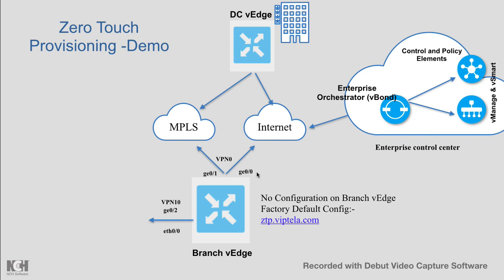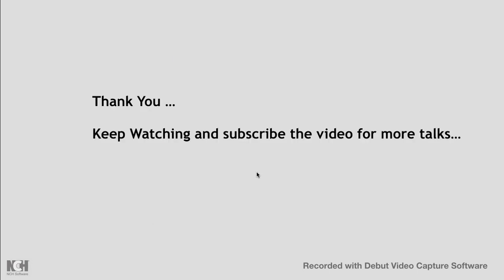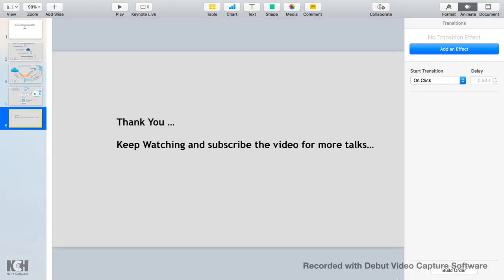You can see the control connections are up — DTLS connections via internet to the vSmart controller, another DTLS via MPLS, and a DTLS connection to vManage. The BFD sessions with other branches are also established. The branch is ready to serve user data traffic with controlled policies pushed from the centralized management. With this I'll end the video — I hope this session was informative. Please subscribe for more videos on SD-WAN, SDN, or SDA. Thank you very much.